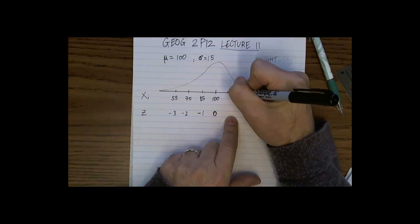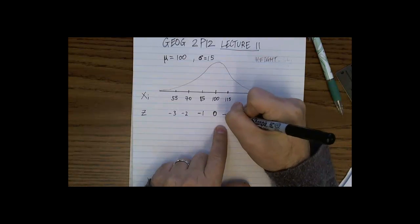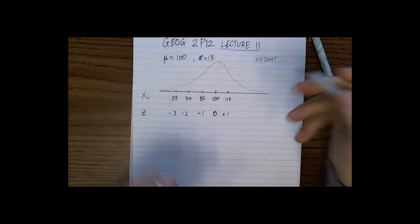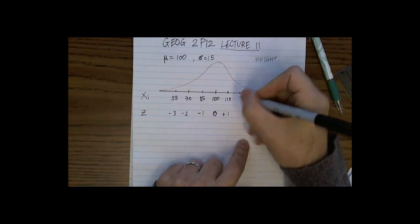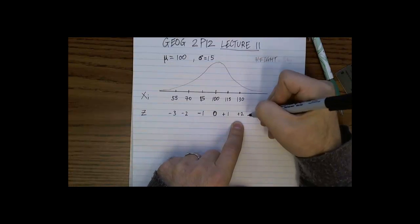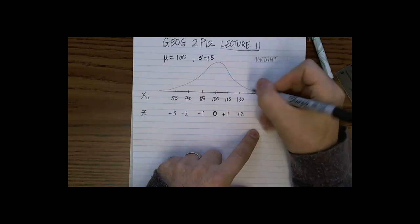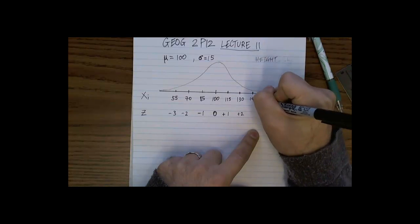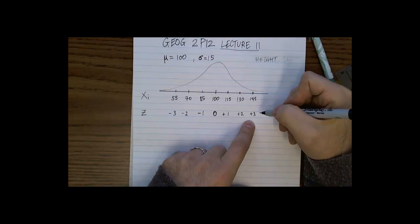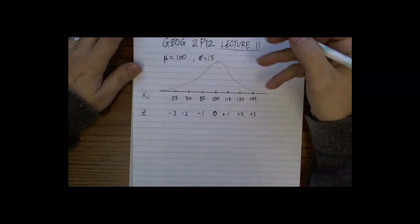And we know that by 100 minus the quantity of 3 times 15 is 45, so 100 minus 45 gives us 55. Now, if we go one standard deviation above the mean, that puts us at 115. So in that case, we're at plus one z. So 100 plus 15 gives us 115. 2 times 15 gives us 30, so 100 plus 30 gives us 130. And then for 145, that's plus 3. So 3 times 15 is 45, 45 plus 100 gives us 145, right?